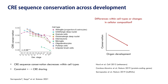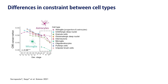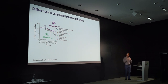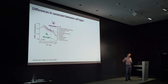We also find differences in constraint between cell types, most prominent in the adult: astrocytes, surprisingly, have the most conserved CREs in the cerebellum, whereas microglia are diverging significantly faster than all other cell types. These differences do not contribute to the whole-organ pattern mentioned before, because these cell types are very rare in the adult and go in opposing directions compared to the average constraint of the remaining cell types.